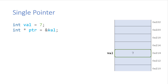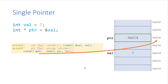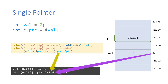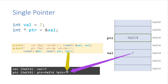For my single pointer, I'm initializing it to the address of that integer variable. So I get some memory for my pointer, and it gets filled with the address of the integer variable it's pointing to. When I print its address, it gives me the address of the pointer variable itself. If I print its value, that's the address of the integer variable. And if I dereference it, I get an alias to the integer variable, so I get the result seven.